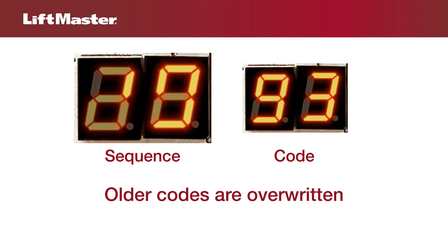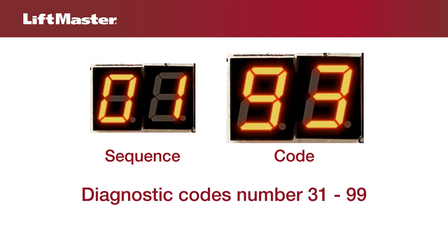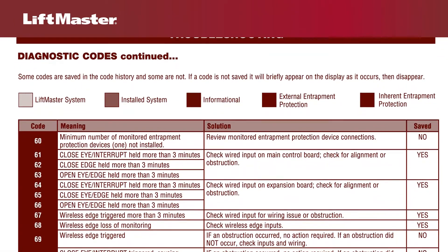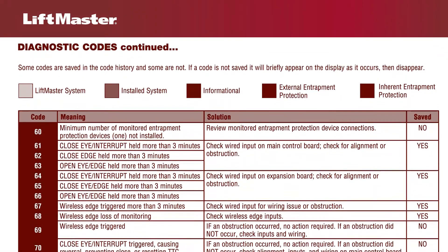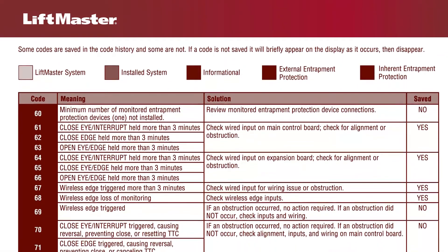If more than 20 codes occur, the oldest codes will be overwritten. The second part of the code is the diagnostic code itself, which will be a number from 31 through 99. For the complete list of diagnostic codes and their meanings, refer to the owner's manual or wiring diagram.